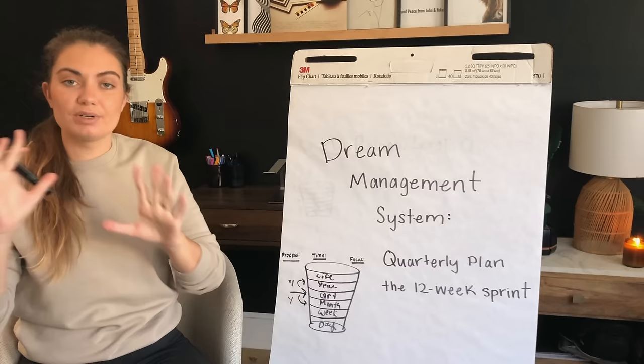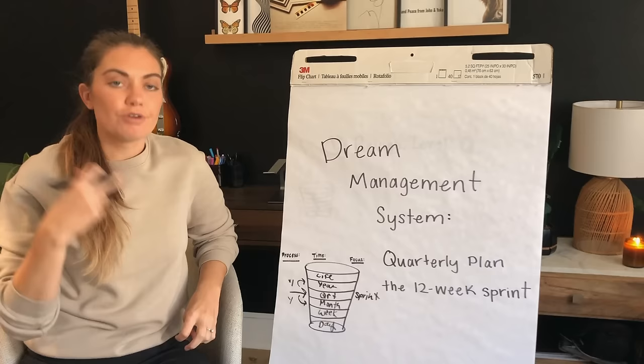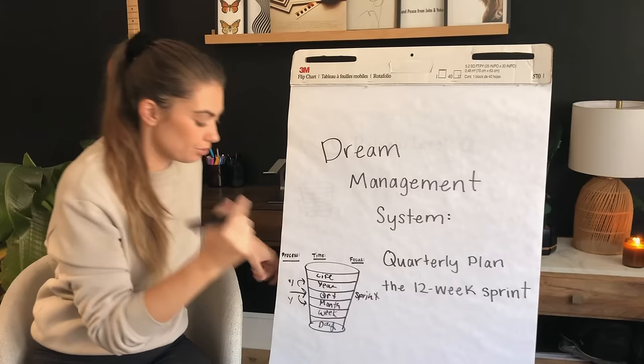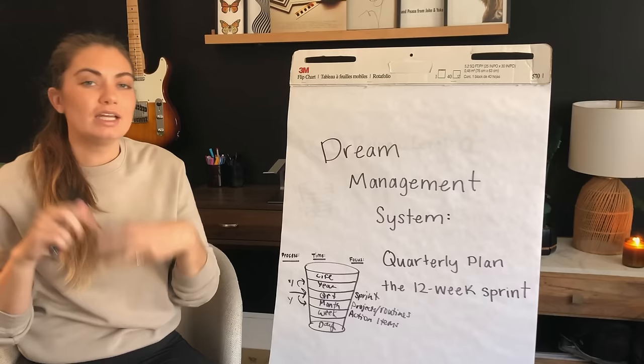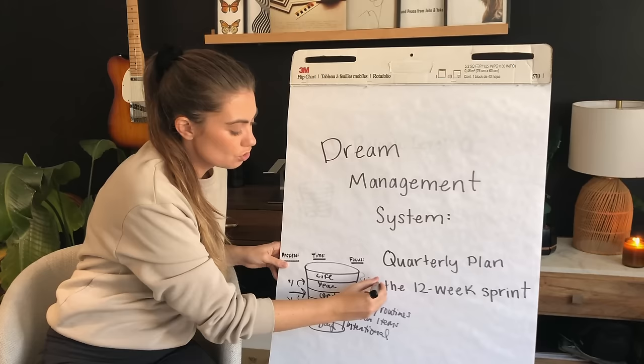Each of these levels has a different focus. At the quarterly planning level, we're focusing on this sprint or phase. For monthly planning, there's more focus on specific projects and routines. For weekly planning, the big focus is determining your action items for the week. For daily planning, the biggest focus is being intentional — an intentional start. For the life and year levels, it's just focusing on the vision, dreaming big, getting connected emotionally to that thing.